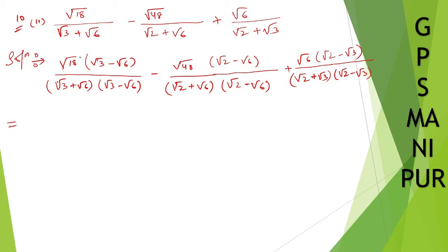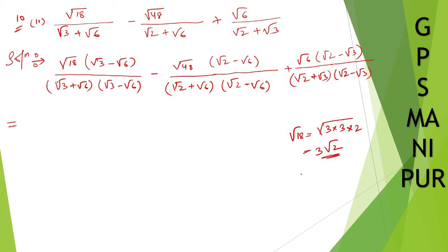Now we are going to simplify all these numbers. Let me write down root 18. Root 18 — how can I write it? Root over 3 into 3 into 2, that is 9 into 2, so root 18 equals 3 root 2.